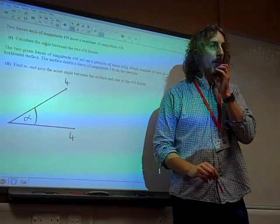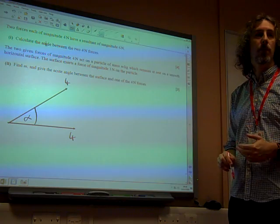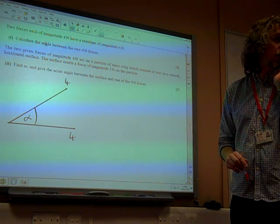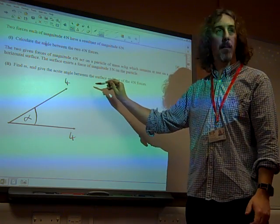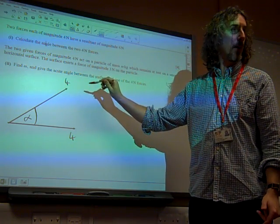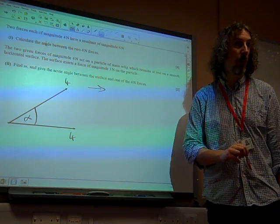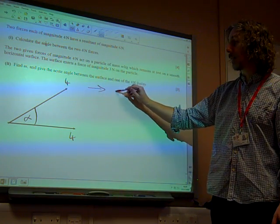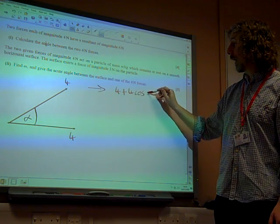Okay, and I know that the resultant of this is 6 Newtons. So, having drawn those two forces like that, I'm going to resolve in each of my two directions to get my horizontal and vertical forces. In the horizontal direction, my resultant force is 4 plus 4 cos alpha.